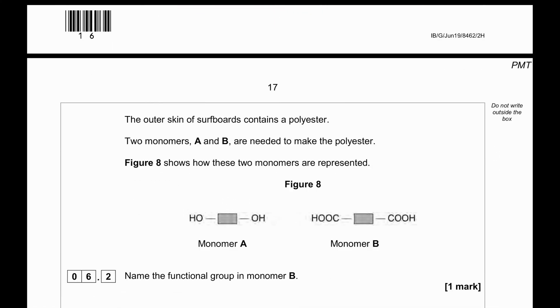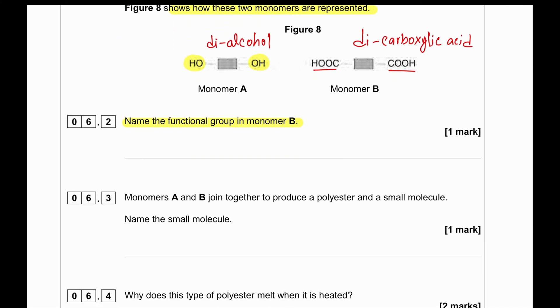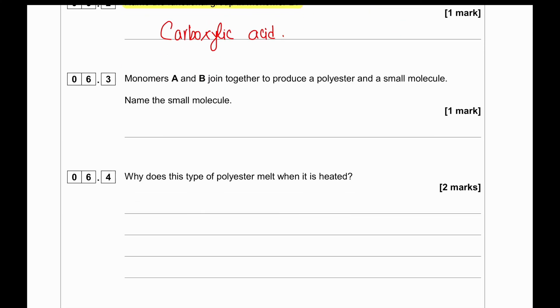The outer skin of surfboards contains polyester. Two monomers A and B are needed to make the polyester. Figure 8 shows two monomers - one has OH and OH on two sides, so monomer A is a diol or dialcohol. The other has carboxylic acid on two sides, so this is a dicarboxylic acid. Name the functional group in monomer B - we just say carboxylic acid.